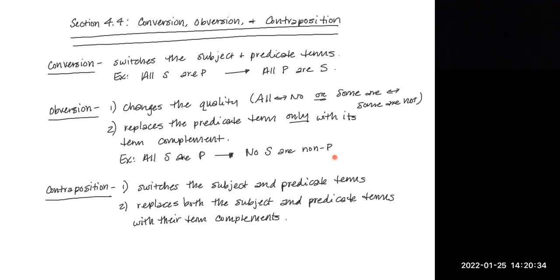Now contraposition switches the places of the subject and predicate terms, but it then replaces both of them with their term complements. So if I were to work contraposition on all S are P, it would become all non P are non S, because what I did was I switched their places so that the predicate term is here and the subject term is here. And I added a non to both of them.